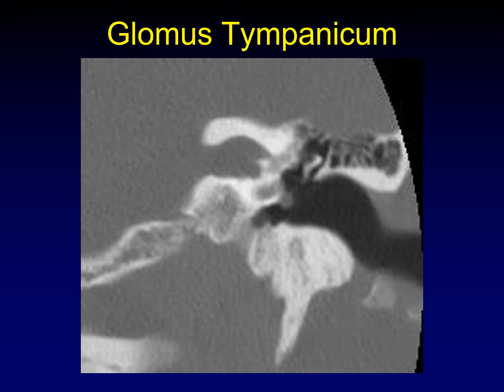Glomus tympanicum tumors arise from Jacobson's nerve, which is a branch of the ninth cranial nerve. They arise in a very specific location on the cochlear promontory. This coronal CT shows the cochlear promontory overlying the basal turn of the cochlea, just beneath the internal auditory canal. This round object here is a glomus tumor in its characteristic location — these are called glomus tympanicum tumors.